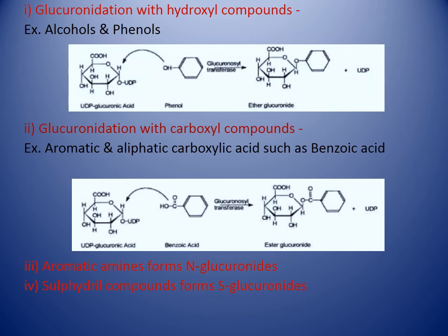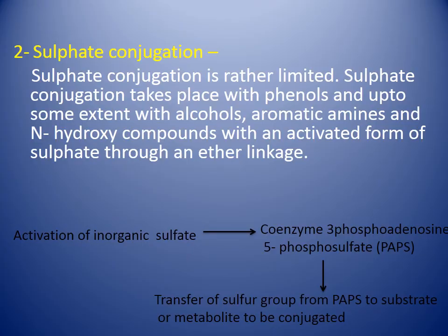Next, glucuronidation with carboxyl compounds — aromatic and aliphatic benzoic acid. Benzoic acid undergoes glucuronidation with UDP-glucuronic acid to form ester glucuronides. Benzoic acid is directly attached to the glucuronic acid; UDP is removed and hydrogen is removed from the benzoic acid to form an ester glucuronide. Aromatic amines form N-glucuronides, and sulfhydryl compounds form S-glucuronides in a similar fashion.